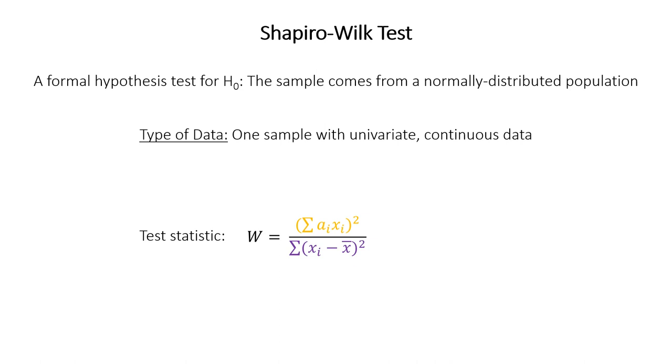So the test statistic calculates this thing called W, and it uses this formula here. The denominator of this formula might be a little bit familiar to you from previous videos, because it's this thing called the sum of squares. Right, each point, subtract the mean, square it, add them all up. And this is basically the same thing as variance. But where does this numerator come from? It's kind of weird looking. And what is this a value anyways?